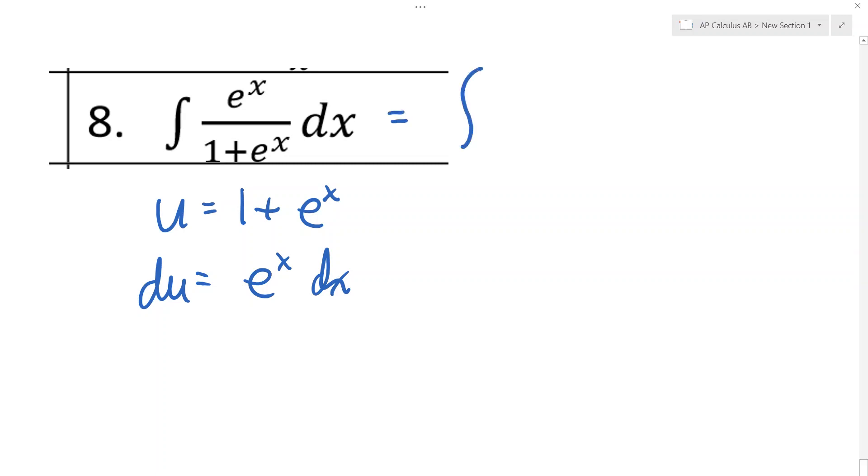So this becomes the integral. e to the x dx is eaten up by the du, and we're left with 1 over u.